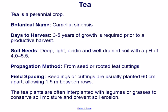Tea is a perennial crop with the botanical name Camellia sinensis. Three to five years of growth is required prior to a productive harvest. Tea needs deep, light, acidic, and well-drained soil with a pH of 4.0 to 5.5. Propagation is from seed or rooted leaf cuttings.